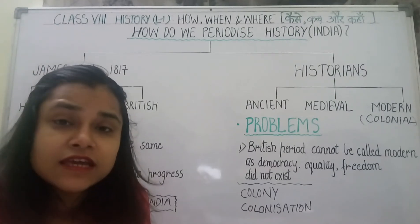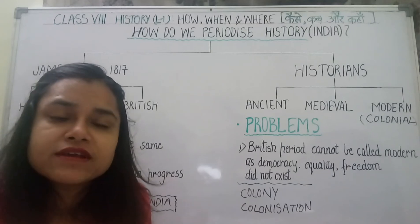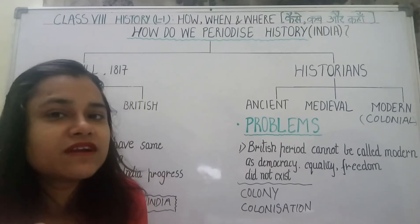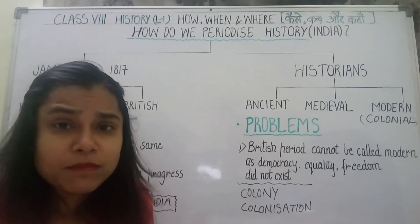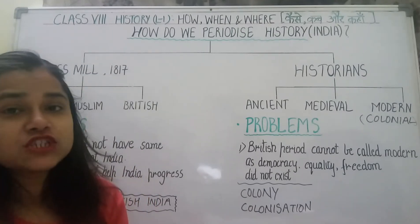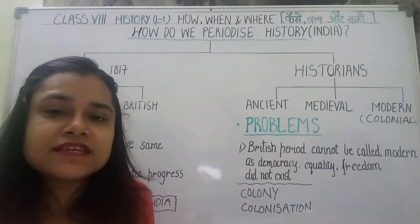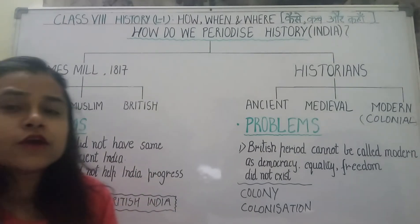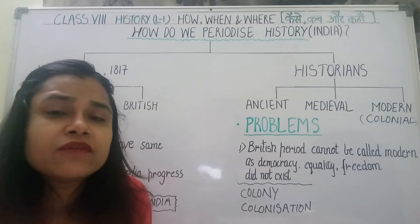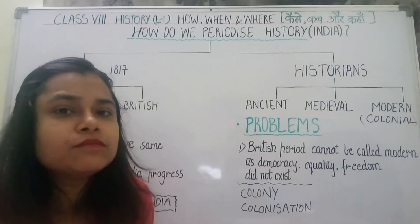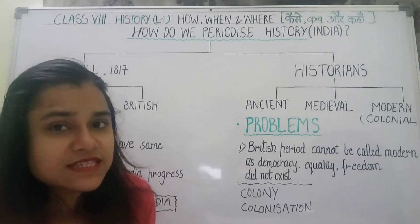Doosri cheez jo unhone kahi — woh maante the ki India mein progress hui nahi jab tak British nahi aayi. Woh maante the British se pehle wali India jo thi woh civilized nahi thi, usmein progress nahi thi. People were uneducated, superstitions bahut thi, caste problems bahut thi, caste ke basis par bahut jhagde hote the. Toh unhone maana ki Indian society was not civilized. Aur jab British aayi, toh British ne Indian society ki pragati ke upar dhyan diya, uski civilization ki. Lekin kya hum yeh conception aaj maan sakte hain? No — British rule did not help India progress. Kuch cheezein chhhod dein, jaise railways, education, otherwise British ne India mein Indian industries ki, business ki bahut buri tarah se unko ruin kar diya. So yeh classification acceptable nahi hai.